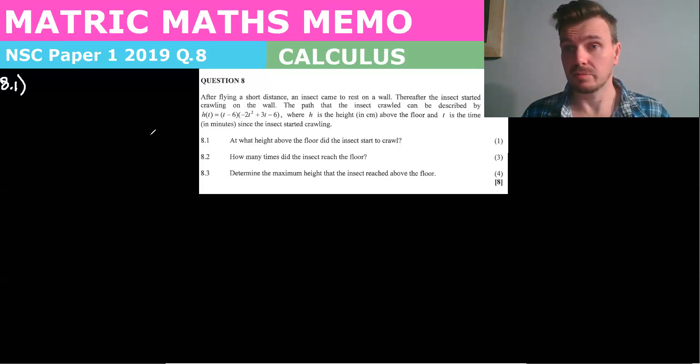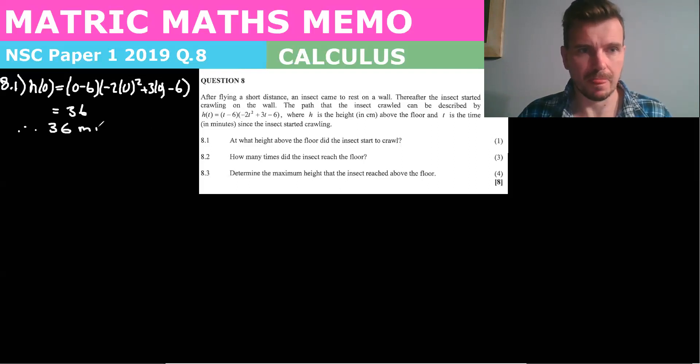Well, it would have started when the time began, which is when t is zero. So all we do is we simply substitute in zero for t. So h of zero equals zero minus six, negative two times zero squared plus three times zero minus six. We get those are all zeros. So you get minus six times minus six, which is 36. Therefore it's 36 and the time is in minutes.